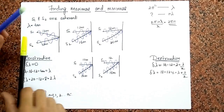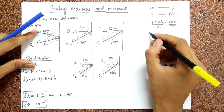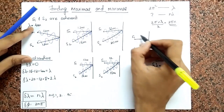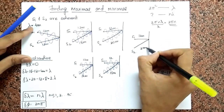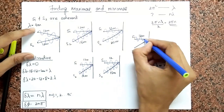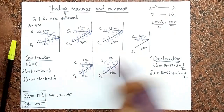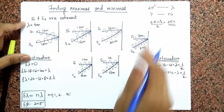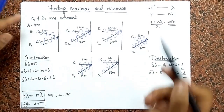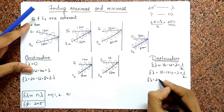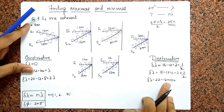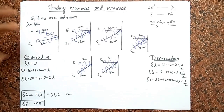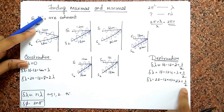Let me do one more. S1 travels 12 meters, S2 travels 22 meters. Three waves for S1. 22 meters corresponds to five and a half waves for S2 — 1, 2, 3, 4, 5, and another half. They kill each other again — destruction. The path difference is 22 minus 12, which is 10. And 10 is 8 plus 2, which is 2 lambda plus lambda over 2. So the pattern is: lambda over 2, then lambda plus lambda over 2, then 2 lambda plus lambda over 2.